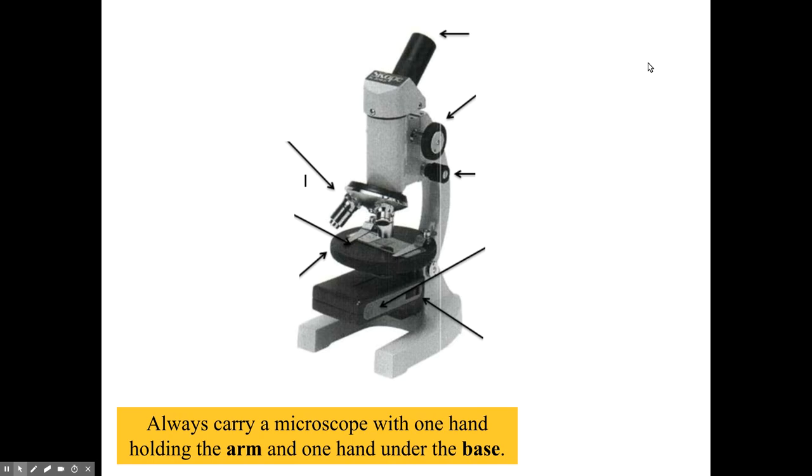Just quickly going over the different parts of the microscope. This first one is the eyepiece. The eyepiece is what contains the ocular lens. It's where you look into the microscope.